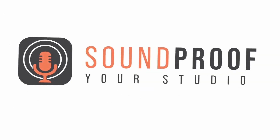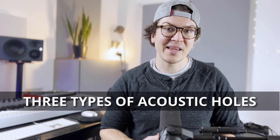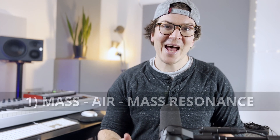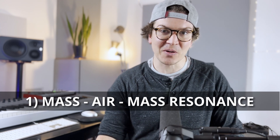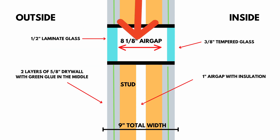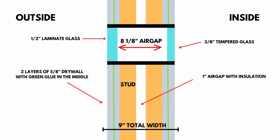Let's jump into this lesson on what are acoustic holes in glass. There are three types of acoustic holes in glass that we're going to talk about today. The first one is called mass air mass resonance — a fancy term for what happens when a sound wave hits the outside pane of glass on a window, comes into the airspace between the two panes, creating a spring effect in the airspace, which then vibrates the inside pane of glass.